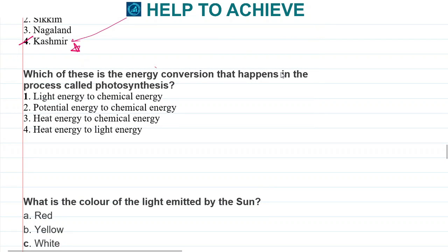Which of these energy conversions happens in the process of photosynthesis? We all know plants undergo photosynthesis to produce fruits. In photosynthesis, they use sunlight and convert it into internal energy, which is in chemical form. The correct answer is photosynthesis converts light energy to chemical energy.